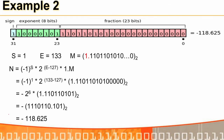For a negative number example: S=1 (negative), E=133 gives 2^(133-127)=2⁶, and the mantissa 0.1101 binary gives 1.1101 × 2⁶. Converting gives minus 118.625. So single precision handles positive and negative numbers with positive and negative exponents.